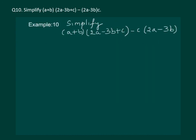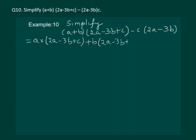Let us start with example 10. We have to simplify (a plus b) multiplied by a trinomial (2a minus 3b plus c), and we have to solve two multiplication terms simultaneously. We start by distributing: a multiplied by (2a minus 3b plus c), plus b multiplied by (2a minus 3b plus c), and we copy the third part as it is. Opening the brackets, a into 2a gives 2a square, and we continue with minus 3ab plus ac.